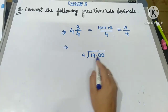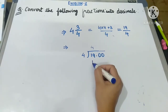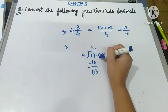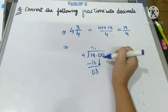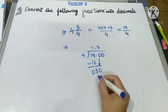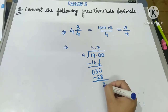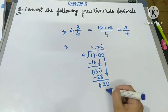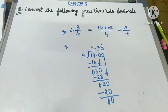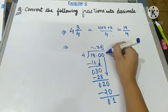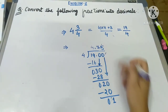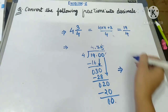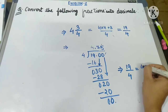Dividing 19 by 4: 4 × 4 = 16, remainder 3, so the whole number part is 4. Place the decimal point and bring down the zero to get 30. 4 × 7 = 28, remainder 2. Bring down the next zero to get 20. 4 × 5 = 20, remainder 0. The division is complete. So 19 upon 4 equals 4.75, which is our required answer.